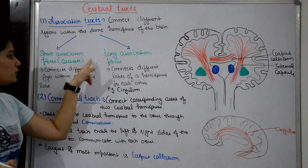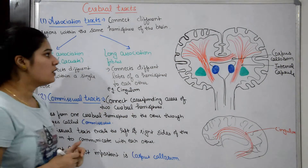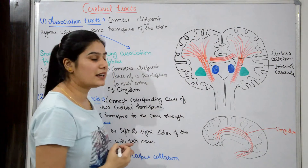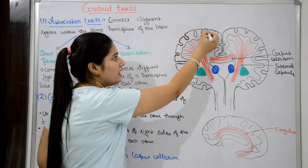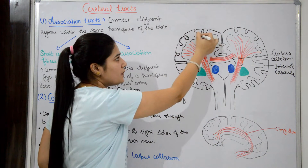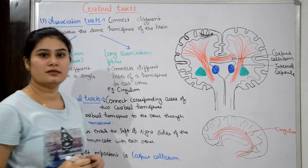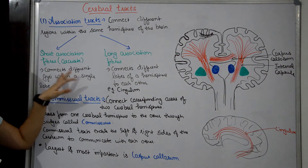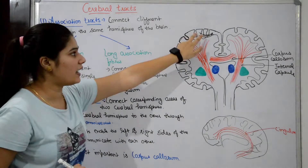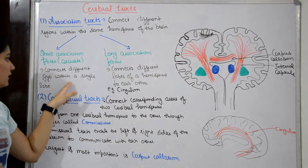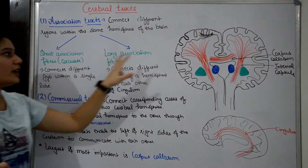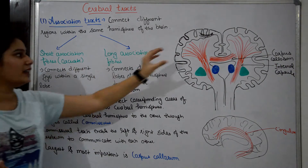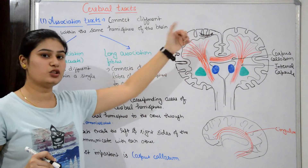So, short association fibers — or arcuate fibers — connect different gyri within a single lobe, for example within the frontal lobe. Short arcuate fibers are confined to the same lobe and do not go into other lobes.